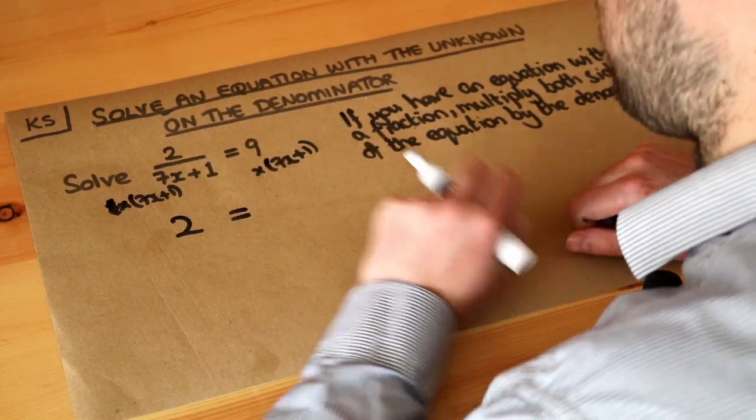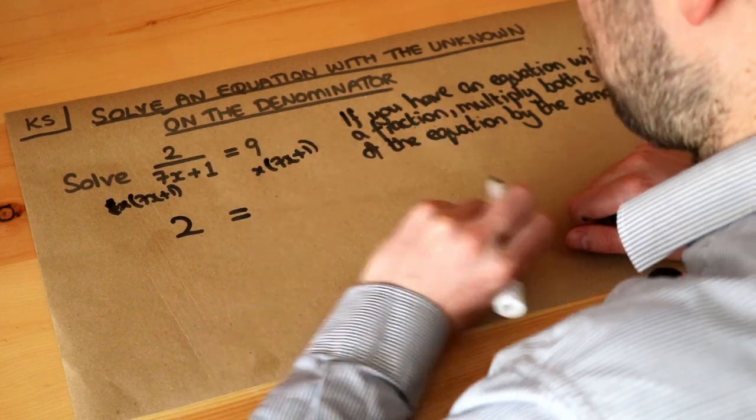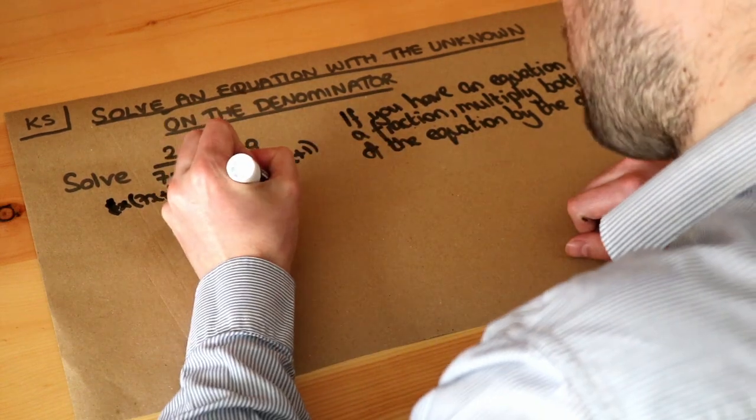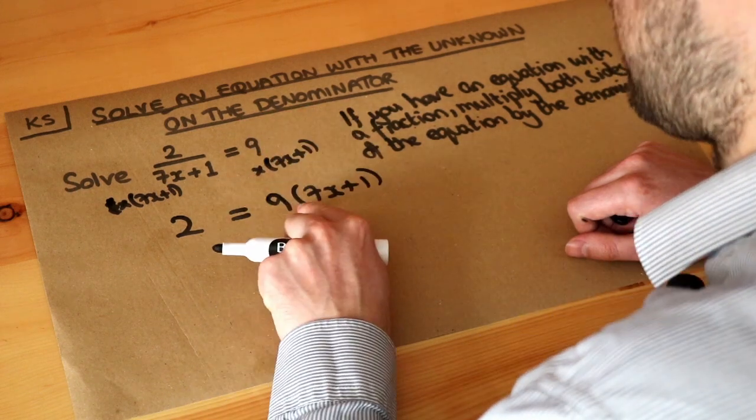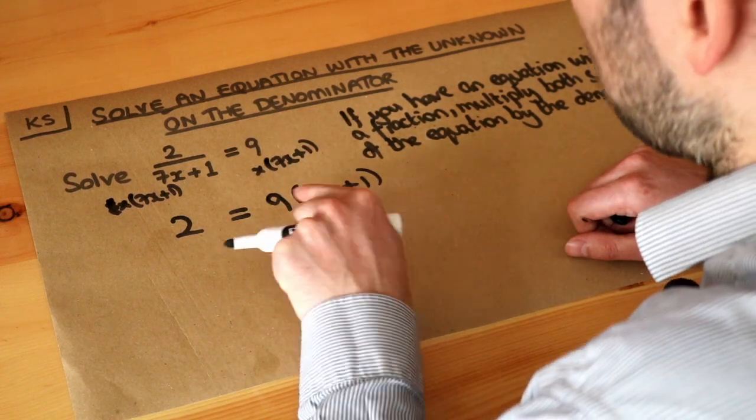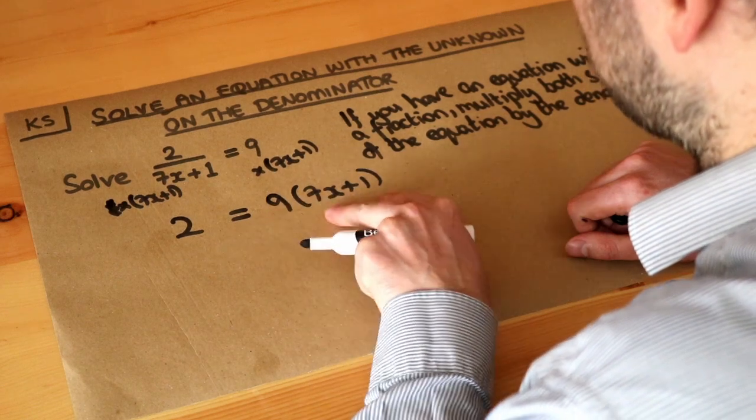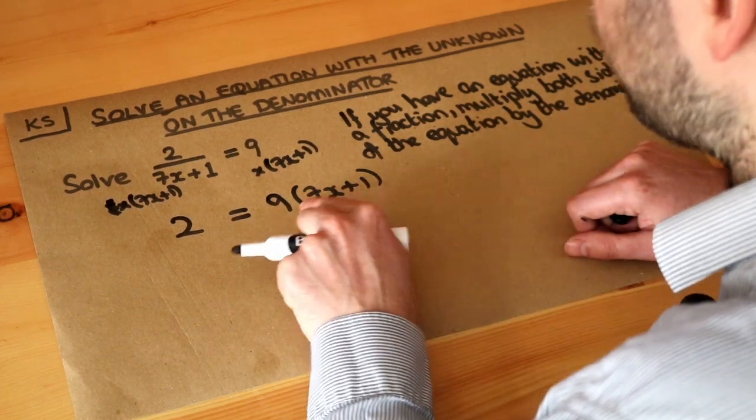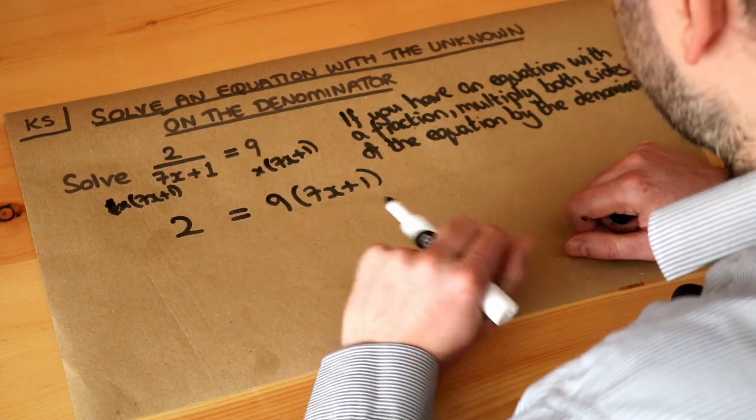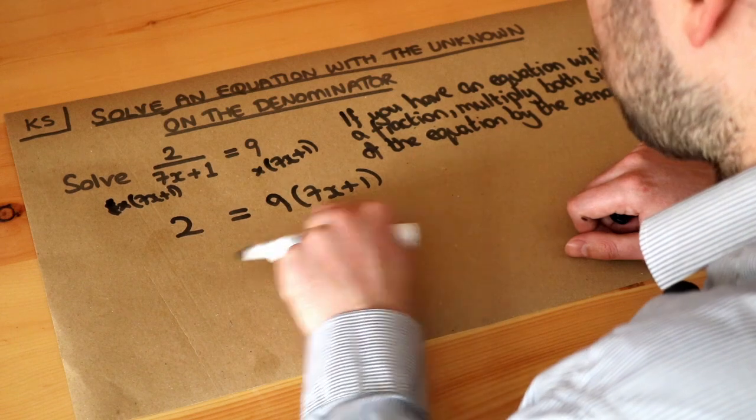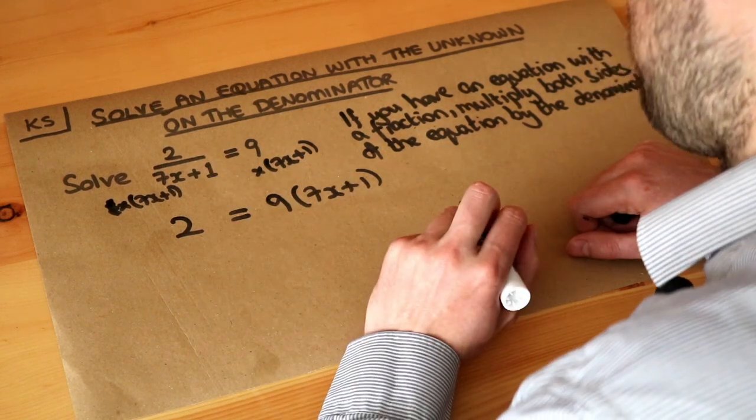And what about the right hand side? The 9 has been multiplied by 7x plus 1, and you can just write 9 brackets 7x plus 1. That means 9 times 7x plus 1. Remember when you have things next to each other in algebra, it means you're multiplying them together, so you don't need the times symbol there. And now we've got a much simpler equation, because we don't have any fractions, we can just multiply these brackets out and then solve from there.